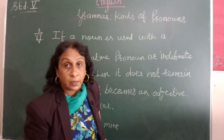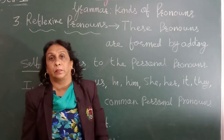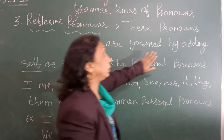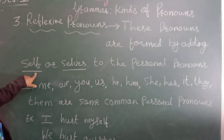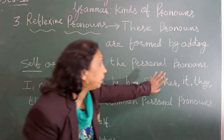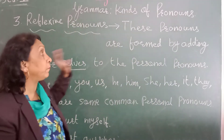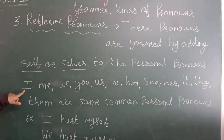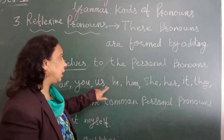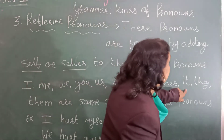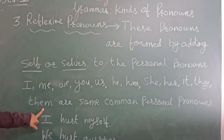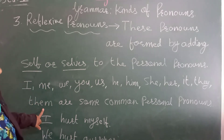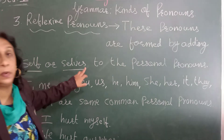Now let us come to the third type of pronoun — reflexive pronouns. These pronouns are formed by adding 'self' or 'selves' to the personal pronouns. The personal pronouns are: I, me, we, you, us, he, him, she, her, it, they. When we use these personal pronouns in reflexive form, we add either 'self' or 'selves' depending on the sentence.